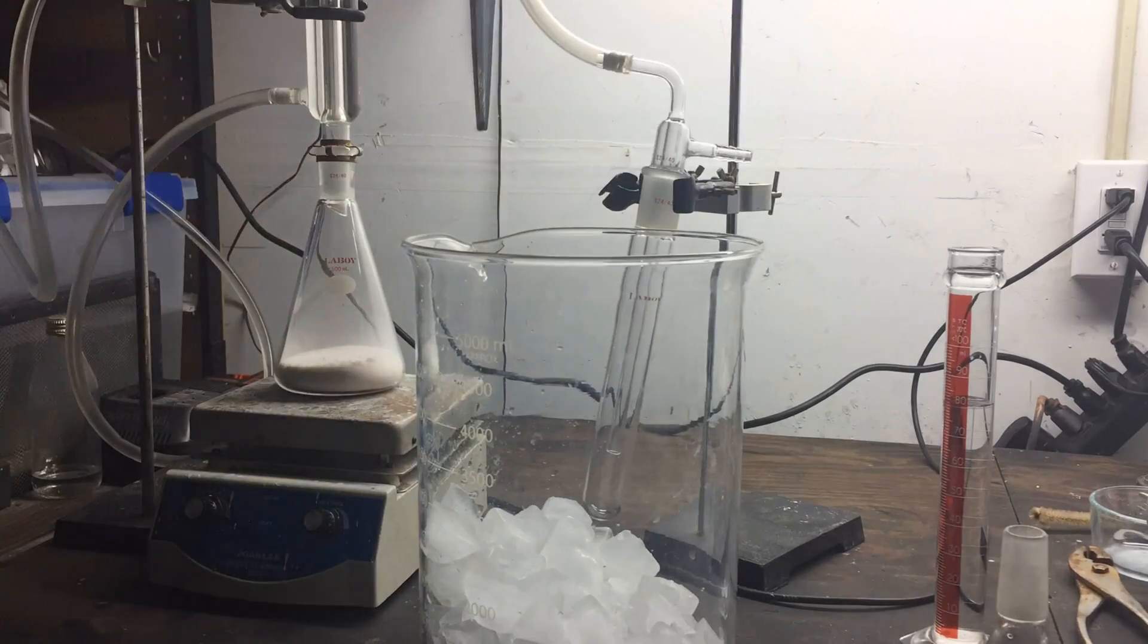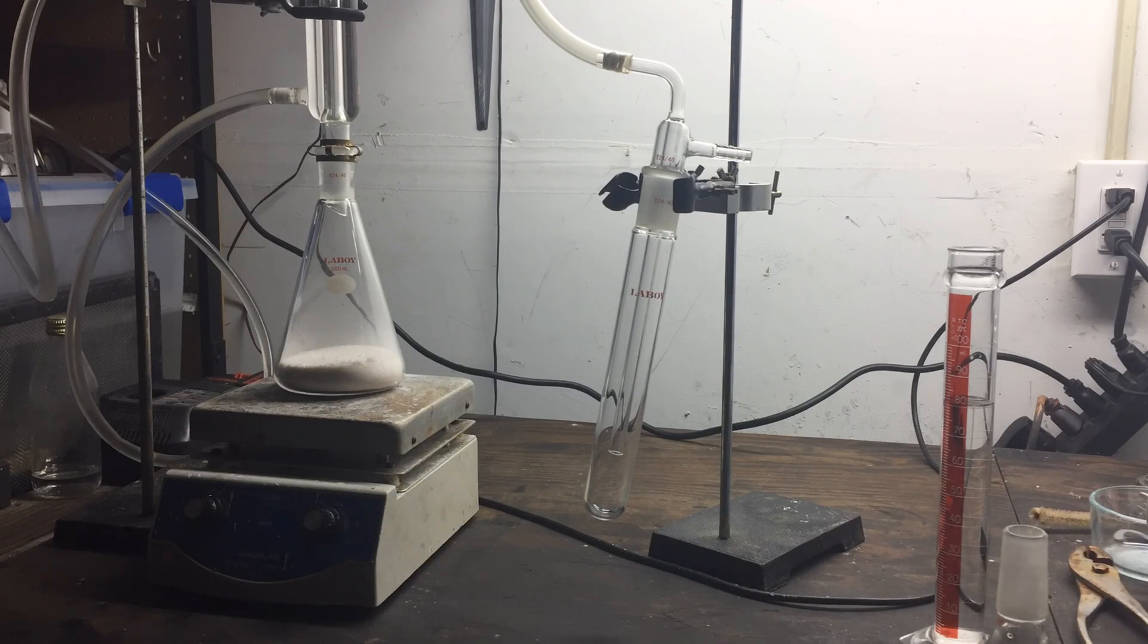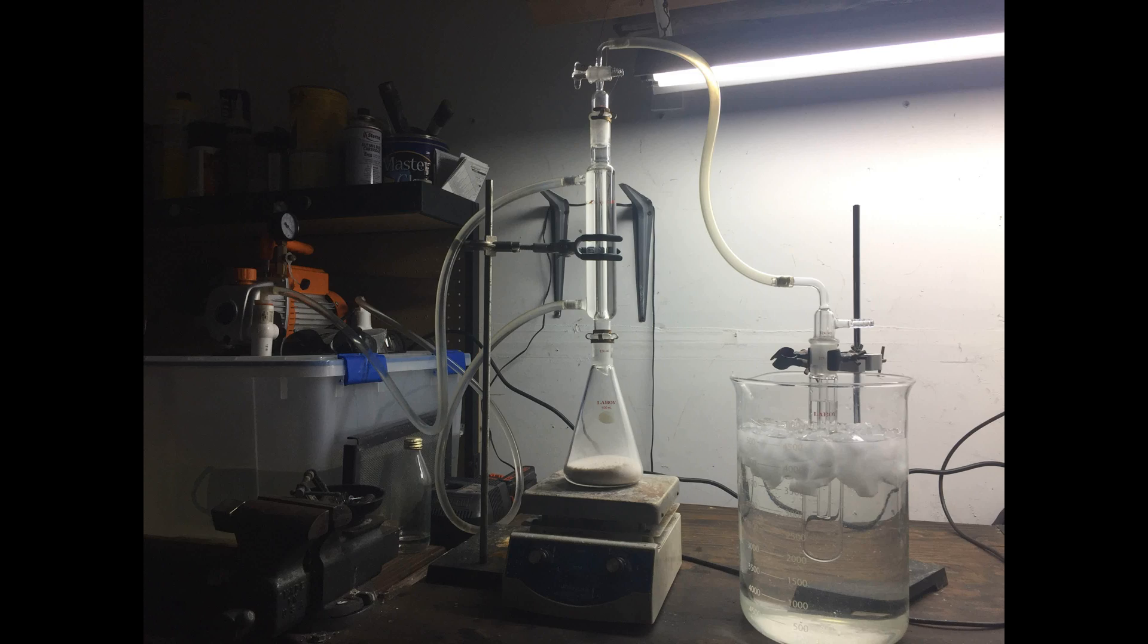Once everything was connected, water was attached to the refluxing condenser, and ice water was added to the large beaker to help the ammonia gas dissolve into solution. This is the finished apparatus you see here.